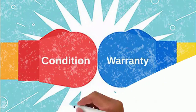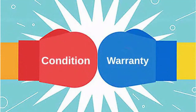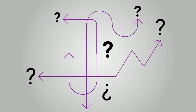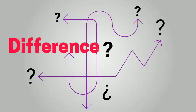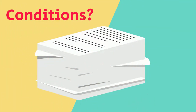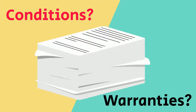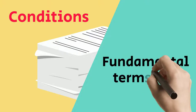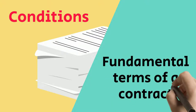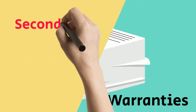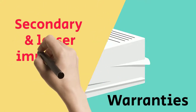We frequently come across the terms conditions and warranties. Have you ever wondered what they mean and what the differences are? Conditions are basically the fundamental terms of a contract — the essential terms that go to the heart of the contract. On the other hand, warranties are secondary and lesser important terms of a contract.